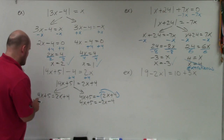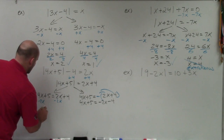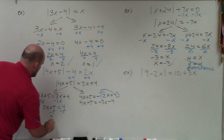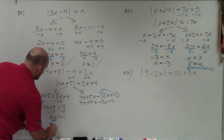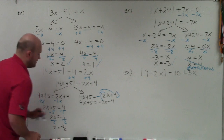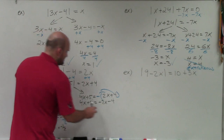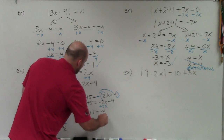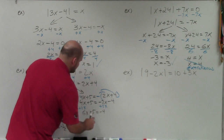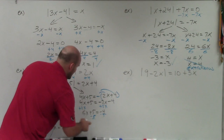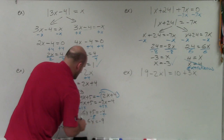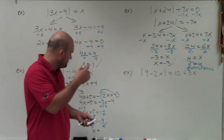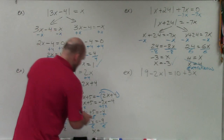Now we go ahead and solve. I'm going to get the x to the same side, so I'll subtract the 2x on both sides. I get 2x plus 5 equals 4. Subtract 5 from both sides: 2x equals negative 1. Divide by 2, so x equals negative one half. Over here, I'm still solving for x on the left side, so I add 2x to get 6x plus 5 equals negative 4. Subtract 5 from both sides: 6x equals negative 9. Divide by 6: x equals negative 9 over 6, which reduces to negative 3 halves.